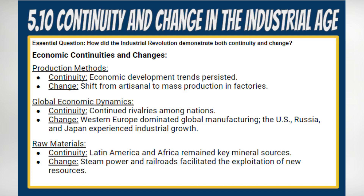3. Sources of Raw Materials. Continuity: Latin America and Africa continued to be vital sources of minerals and metals. Change: steam power and railroads facilitated the exploitation of previously untapped resources, leading to a shift in the distribution of manufacturing output.